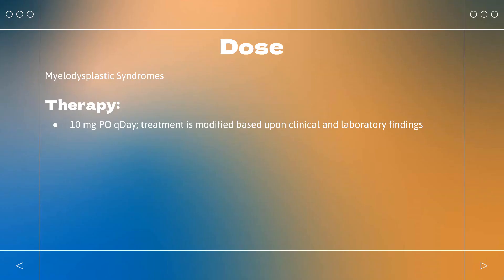Myelodysplastic syndromes: Indicated for transfusion-dependent anemia due to low- or intermediate-1-risk myelodysplastic syndromes (MDS) associated with a deletion 5Q cytogenetic abnormality, with or without additional cytogenetic abnormalities. Dose: 10 mg daily. Treatment is modified based upon clinical and laboratory findings. Continue treatment until disease progression or unacceptable toxicity.